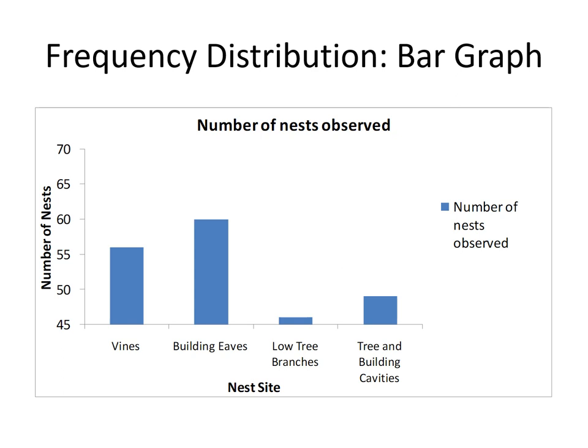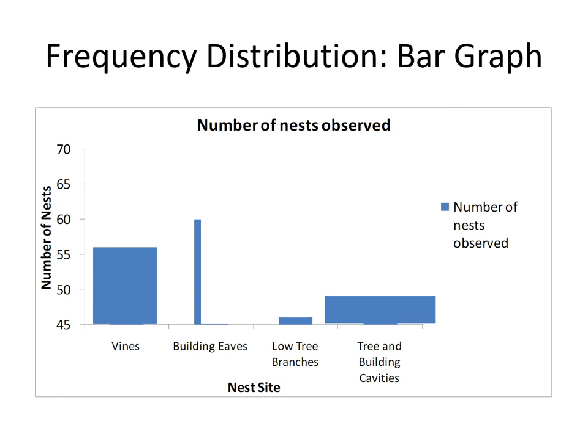Here is the same dataset, but we did not start at zero. Look at the low tree branches category — there's the impression that there are almost no nests found there, but actually there are more than 45 of them, simply because we didn't start at zero.